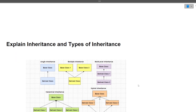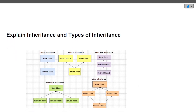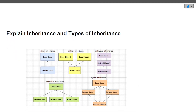The next question was: explain inheritance and types of inheritance. Inheritance is one of the OOP concepts wherein the child class inherits some of the properties from the parent class. There are different types: single inheritance, multiple inheritance, multi-level inheritance, hierarchical inheritance, and hybrid inheritance. Note that multiple and hybrid inheritance are not present in Java.